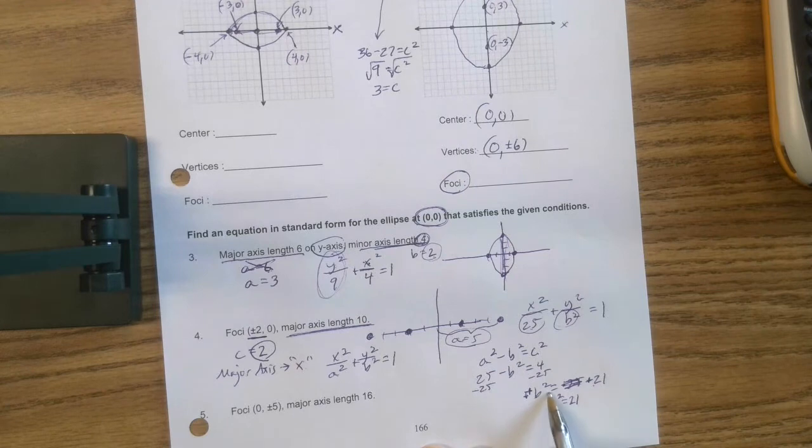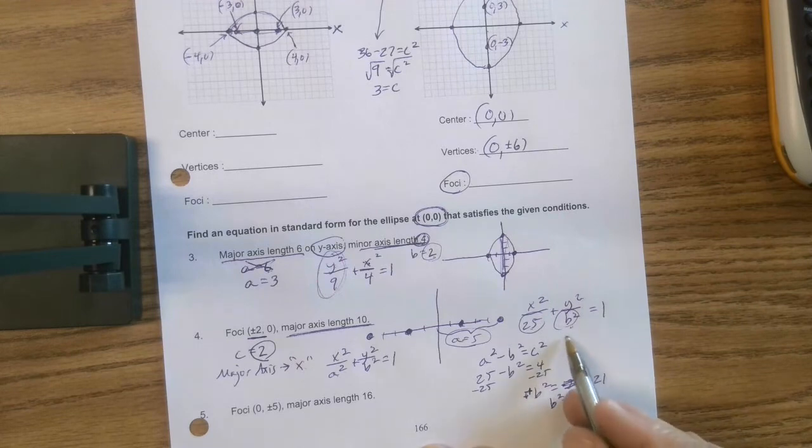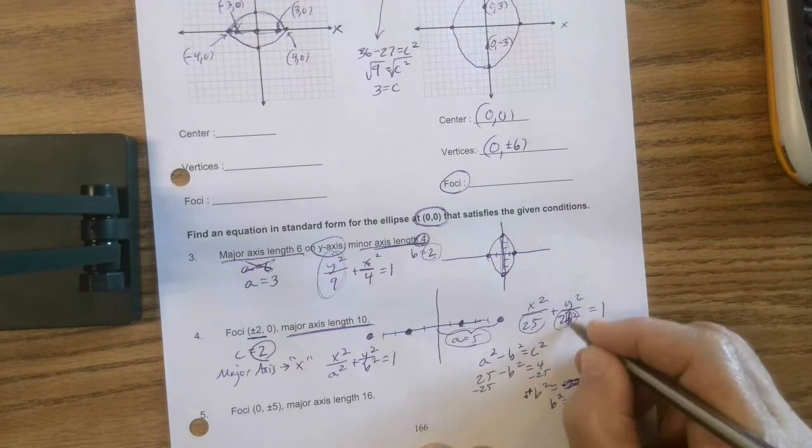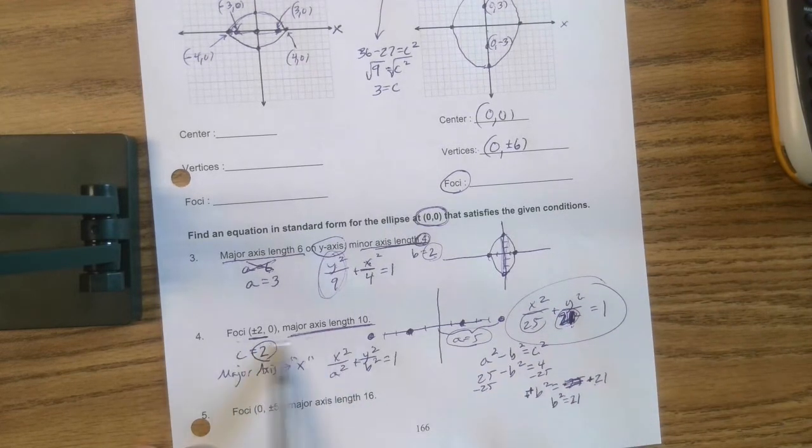Now a lot of people would just go, all right, I'm going to take the square root. But remember, we want b squared underneath that. So we're done. Just put that 21 right there. And we're done. There's the equation of that information.